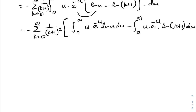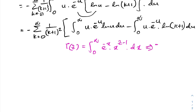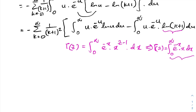Now I recall the definition of the gamma function: gamma of c equals the integral from 0 to infinity of e to the minus u times u to the c minus 1, du. Since natural log of (k plus 1) is a constant, we can take it outside the integral. The remaining integral of u times e to the minus u du equals gamma of 2. For the other integral, I differentiate the gamma function with respect to c.